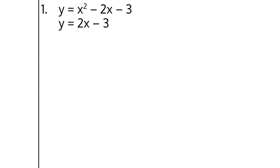I have the system containing the quadratic equation y equals x squared minus 2x minus 3, and the linear equation y equals 2x minus 3. We're looking for the ordered pair that will satisfy both of these equations — in other words, the ordered pair or pairs where the line and the parabola intersect.